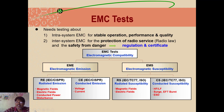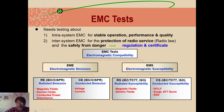Before getting into it, what is the need for testing? Intrasystem EMC is for stable operation, performance, and quality. Intersystem EMC is for the protection of radio services and safety from danger. Within the system, the components must work stably with good performance and quality — that should be ensured. Similarly, between systems there should not be any interference from outside, so protection of radio services and safety from dangers is also needed.